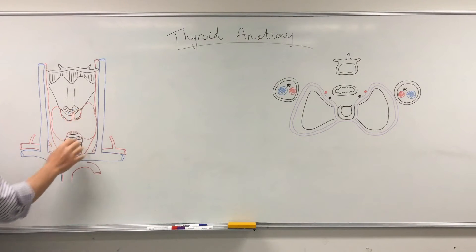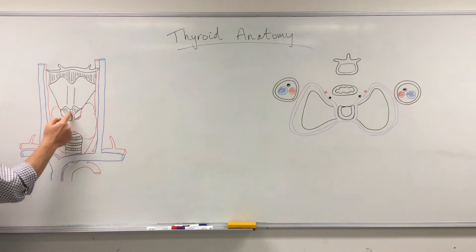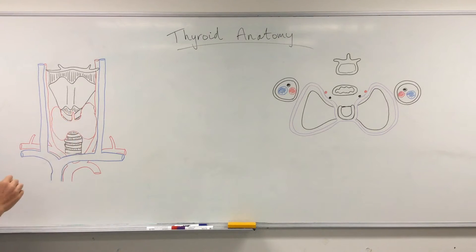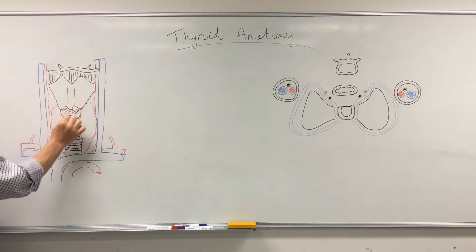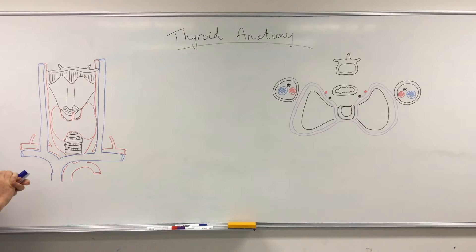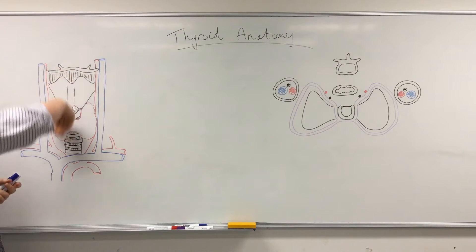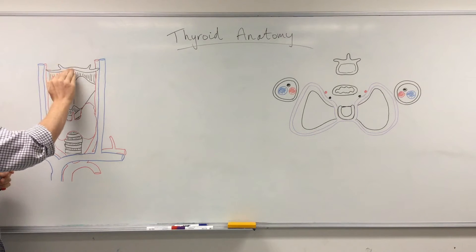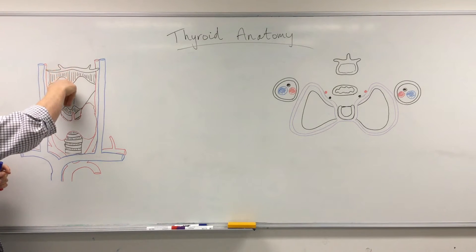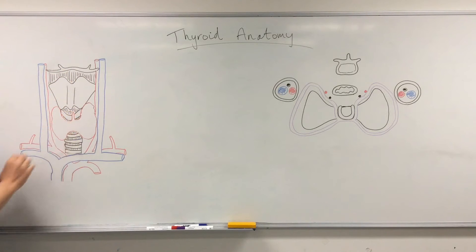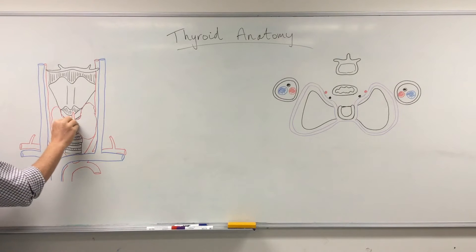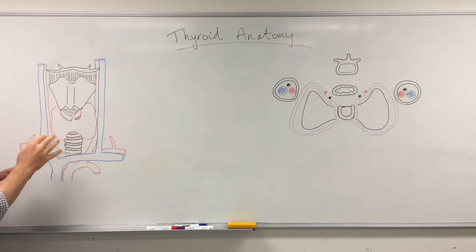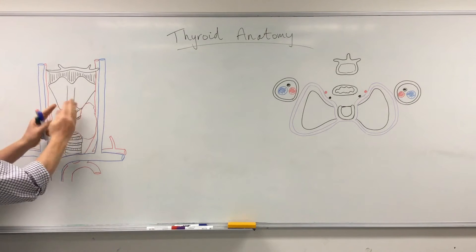Besides the main lobes, the thyroid can also have a pyramidal lobe jutting up in the midline, which can project all the way up to the hyoid bone. This is probably a remnant of the thyroid's embryological descent — the thyroid originally comes out of the back of the tongue, moves down in front of the hyoid, traverses underneath it, and descends to its current position.